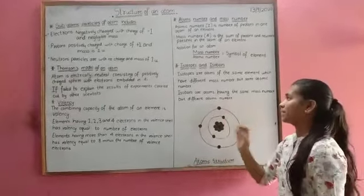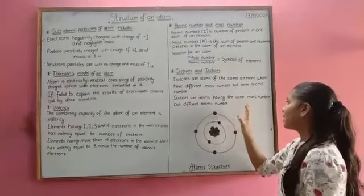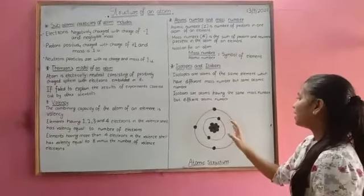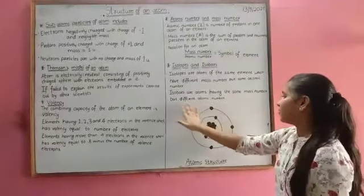Isotopes and isobars. Isotopes are atoms of the same element which have different mass number but same atomic number. Isobars are atoms having the same mass number but different atomic number.